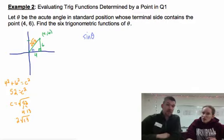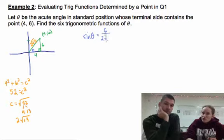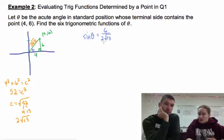Sine is opposite over hypotenuse: 6 over 2√13. We can leave it like that; we don't have to rationalize. If you do rationalize, keep in mind you only have to multiply by the square root. You don't have to multiply by that 2 as well.